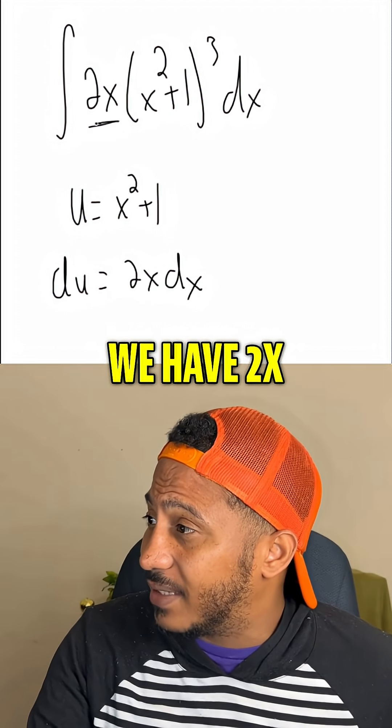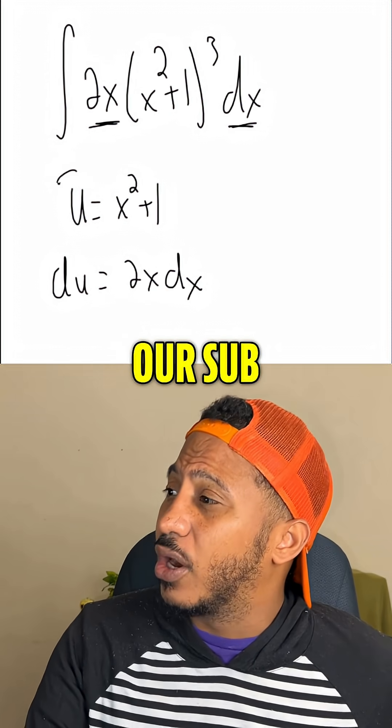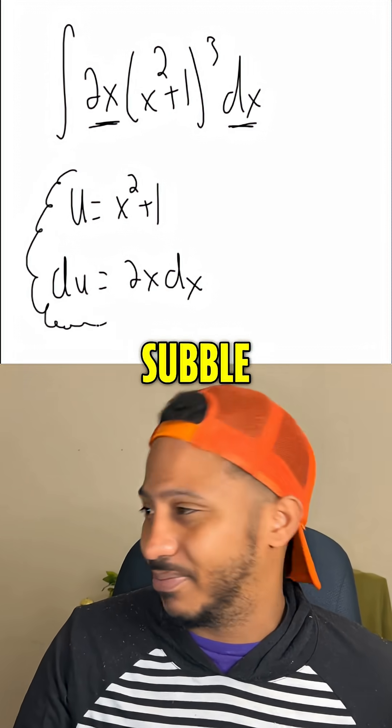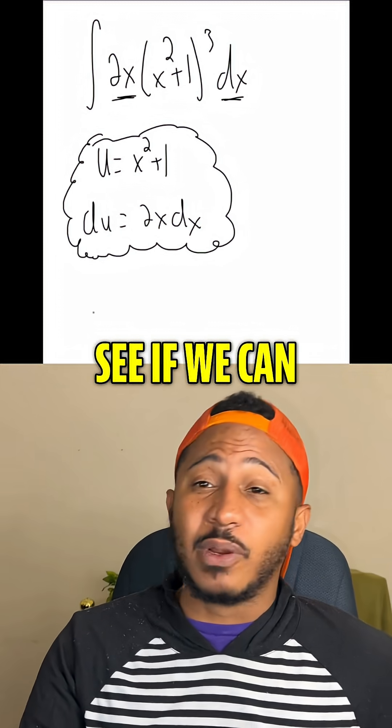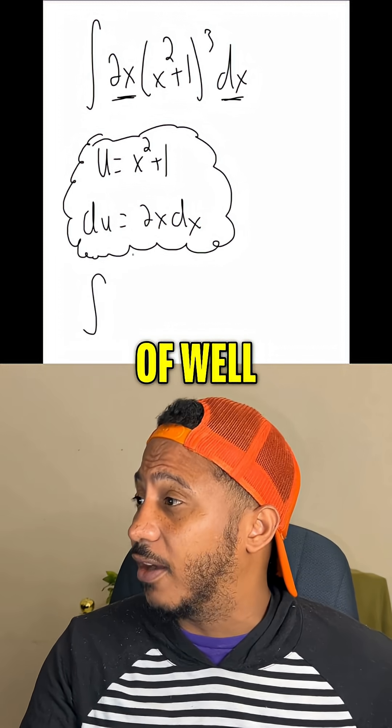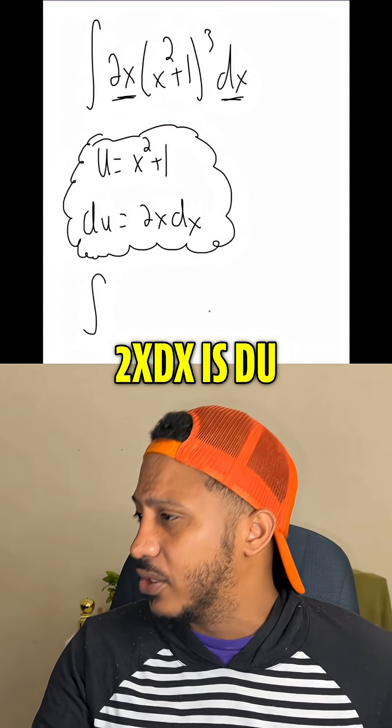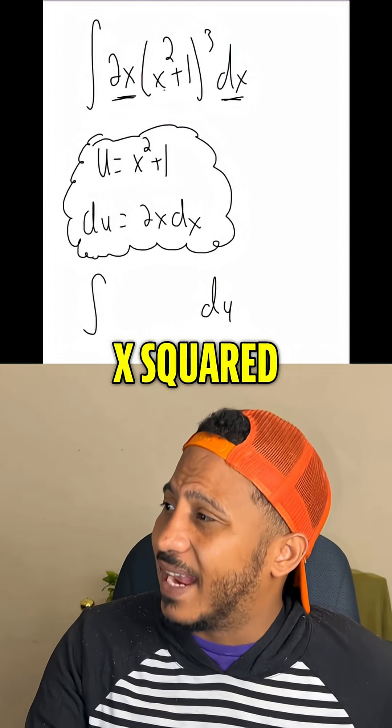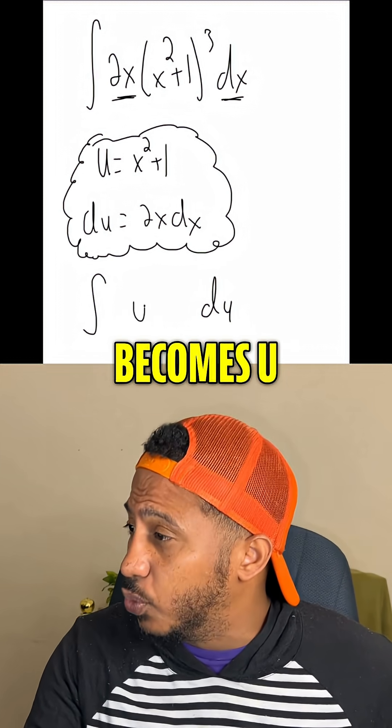And we do have that. We have 2x and then dx in our original integrand. And so this is our sub-bubble. I call it a sub-bubble. But now we can see if we can rewrite this integral. We know 2x dx is du, so that's du, and then we know x squared plus 1 is u, so this becomes u cubed.